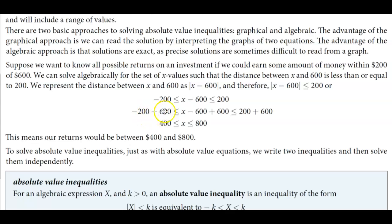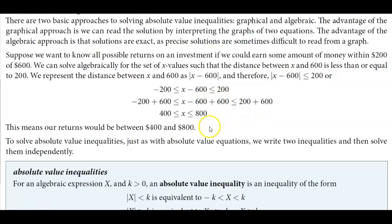What we would do is add 600 to all three sides. So we would have -200 + 600 = 400, x isolated in the middle, and 200 + 600 = 800. This means our returns would be between $400 and $800.